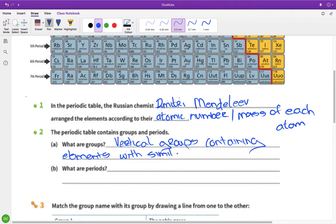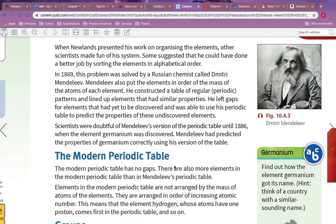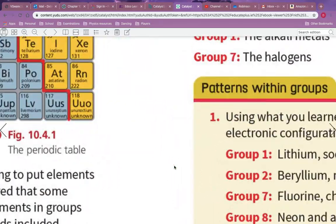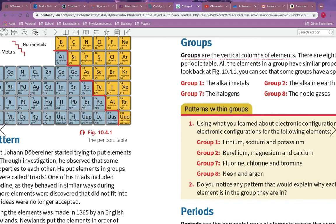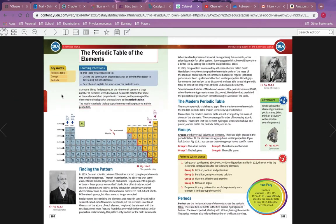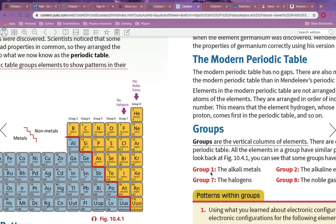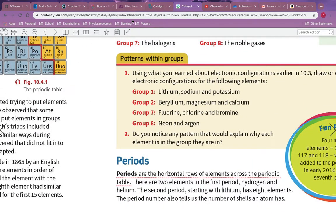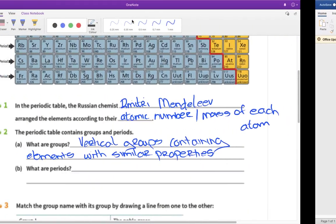Elements with similar properties, okay. So all they have is vertical columns of elements, so you didn't even need the next bit about having similar properties, but it is no harm. And yeah, and then periods, they're just saying horizontal.